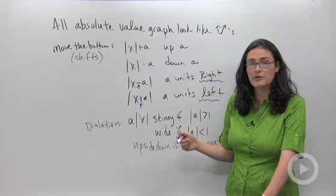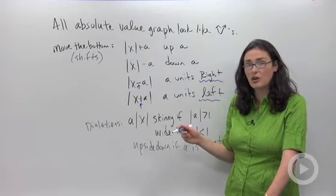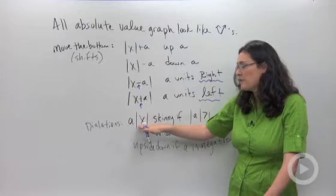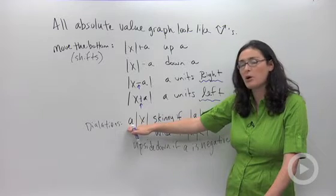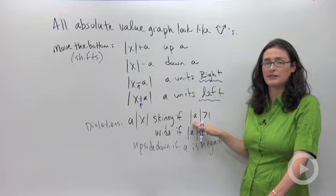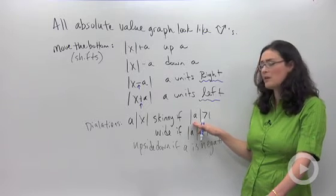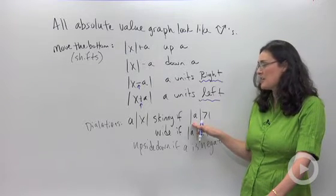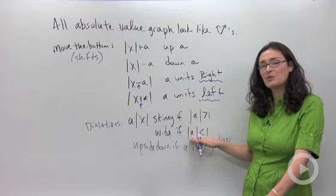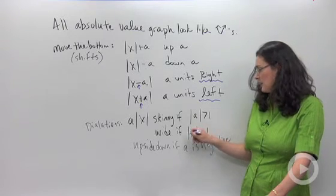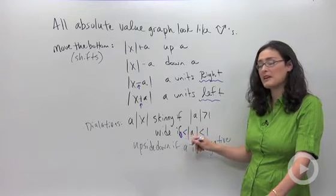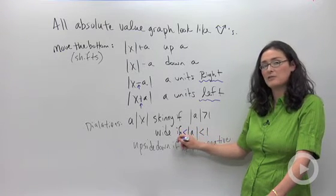The other thing you might do with your V is make it skinnier or wider, based on what we call dilations. If the absolute value of x is being multiplied by a, and a is greater than one, it's going to become a skinnier V. If the absolute value of a is less than one but greater than zero, it's going to be a wider absolute value V.